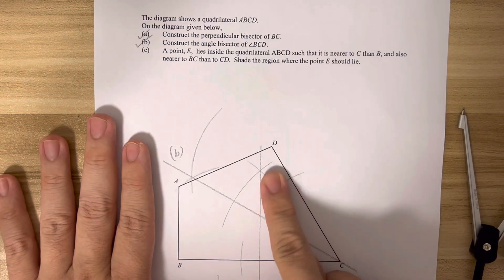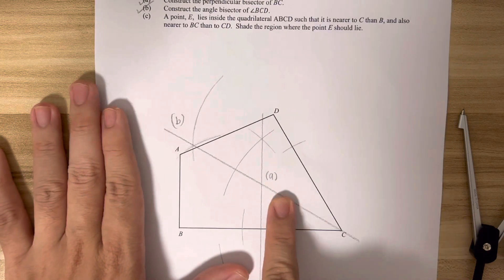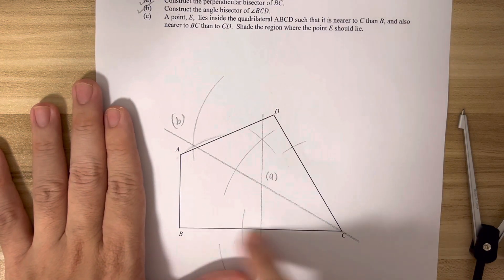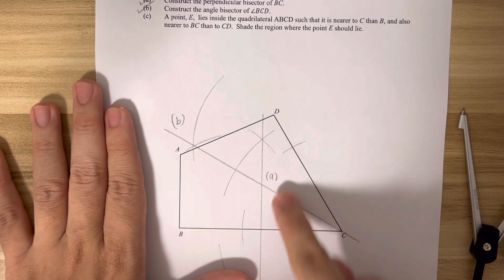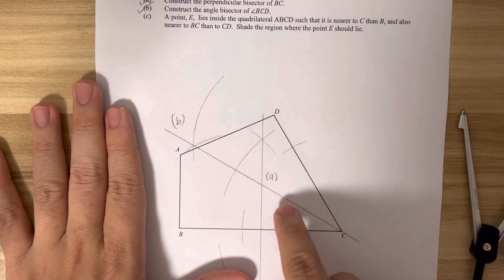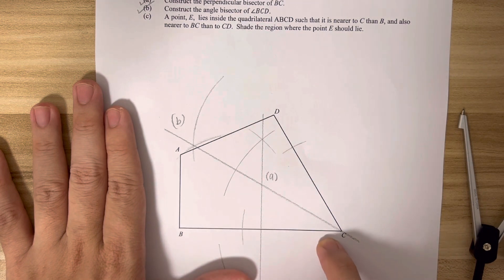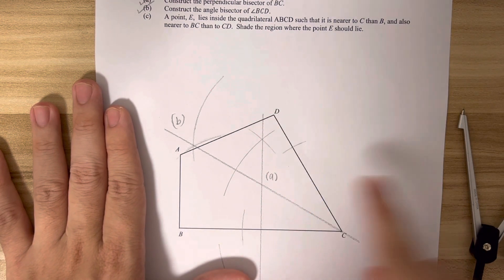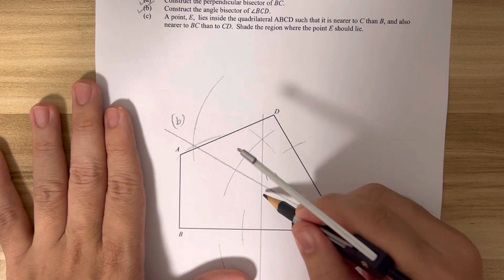And yet at the same time it is nearer to the line BC - that means it must be below or on top. Below, yes, because below is nearer to BC. On top is nearer to CD. So the only place will be this region here.